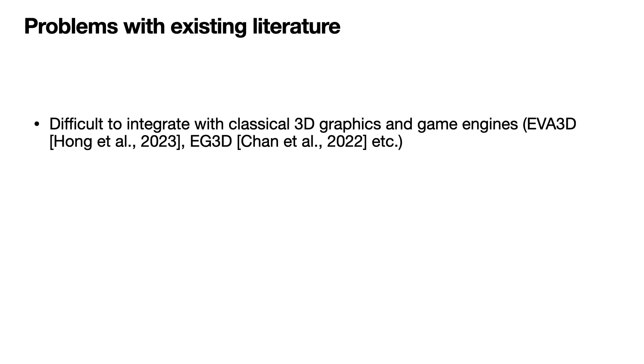Existing approaches are primarily based on implicit representations with neural radiance fields. Therefore it isn't easy to integrate them with existing 3D scenes. We mitigate this by using displacements on top of simple mesh's clothing geometry representation and its UV space as texture maps.